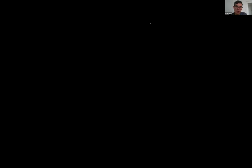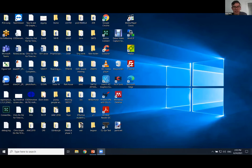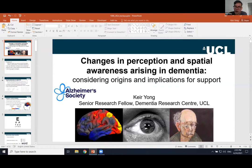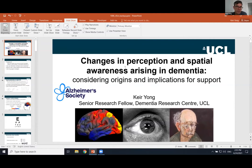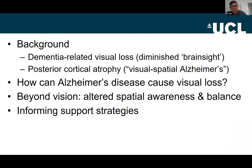Thank you Michael for the kind invitation to present. If people have any questions they want to raise in the chat or afterwards via email, I'm very happy to answer. My name is Keir, I'm a neuropsychologist and Alzheimer's Society Research Fellow based at University College London. I'll be starting with a very general overview of dementia-related visual impairment. Such impairment refers to difficulties perceiving what or where things are, arising not from any eye condition but from diminished capacity of areas towards the very back of the brain in interpreting visual and spatial information.